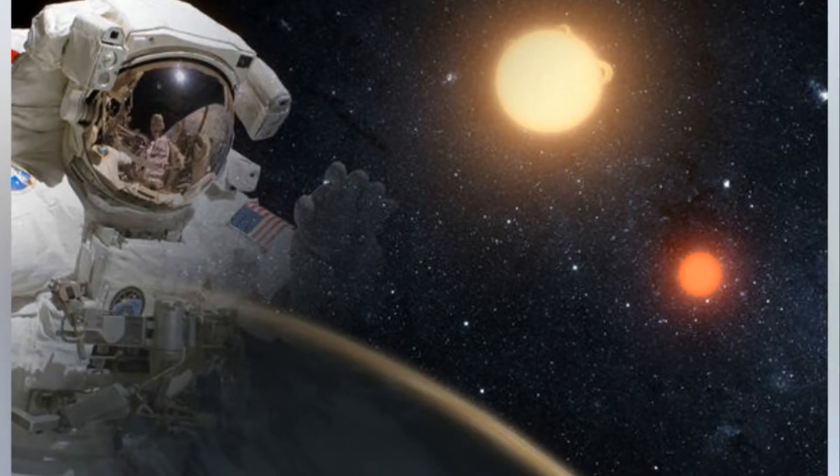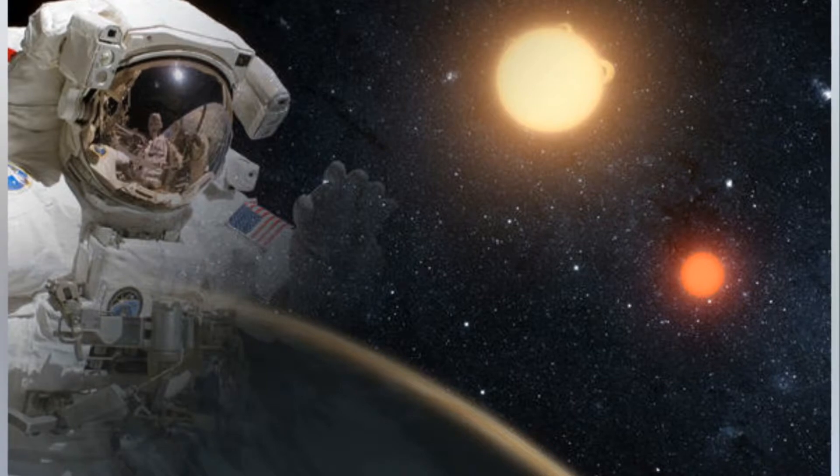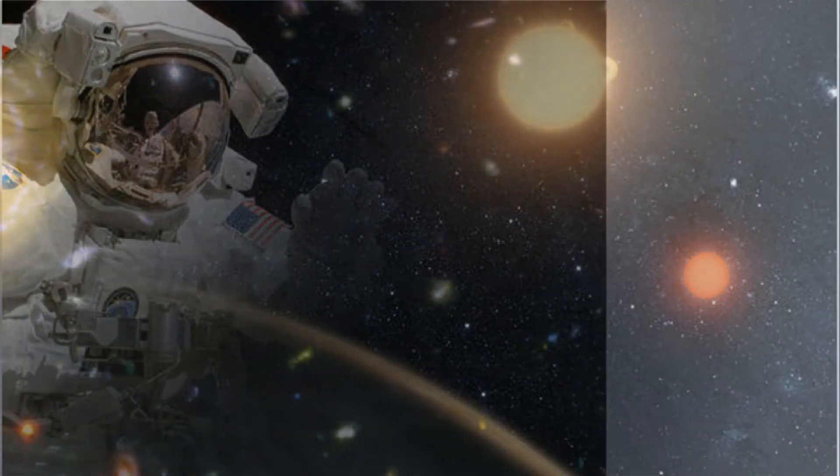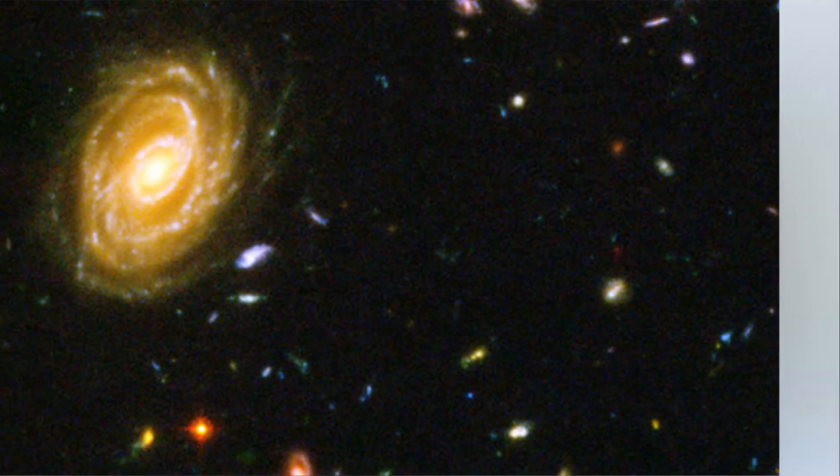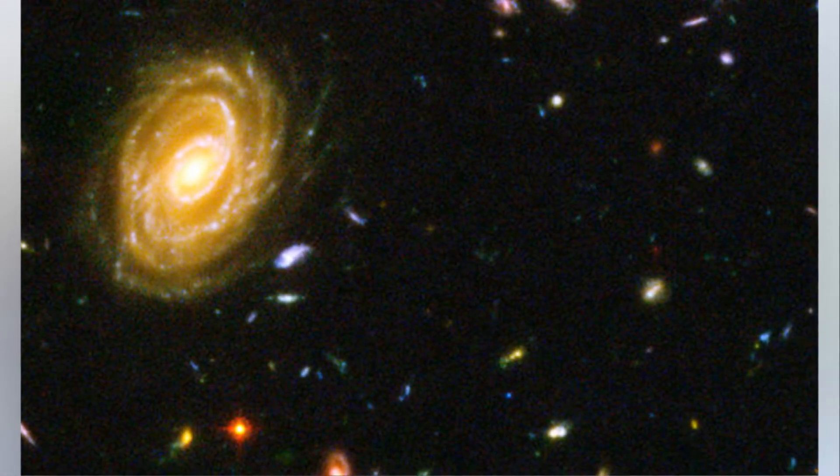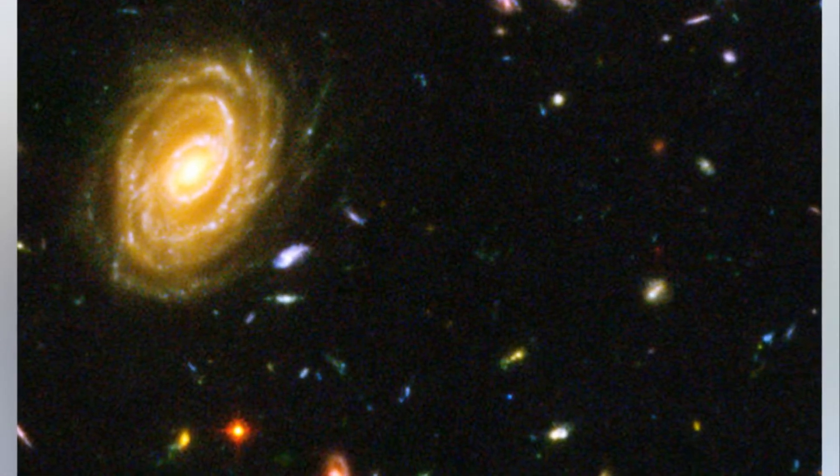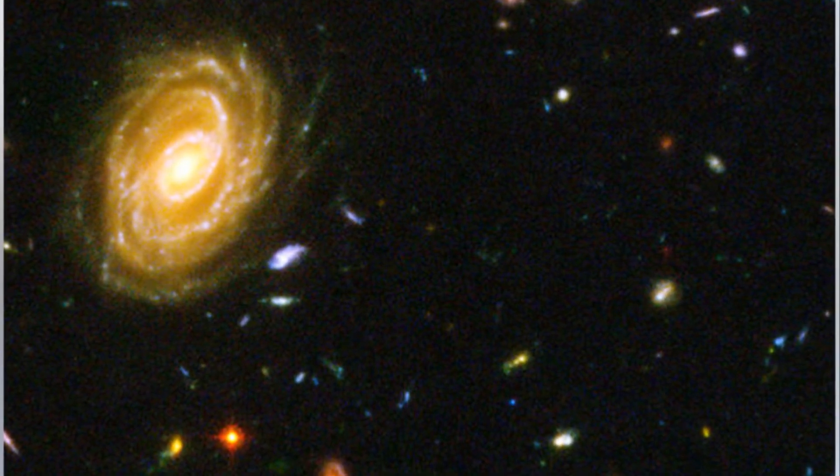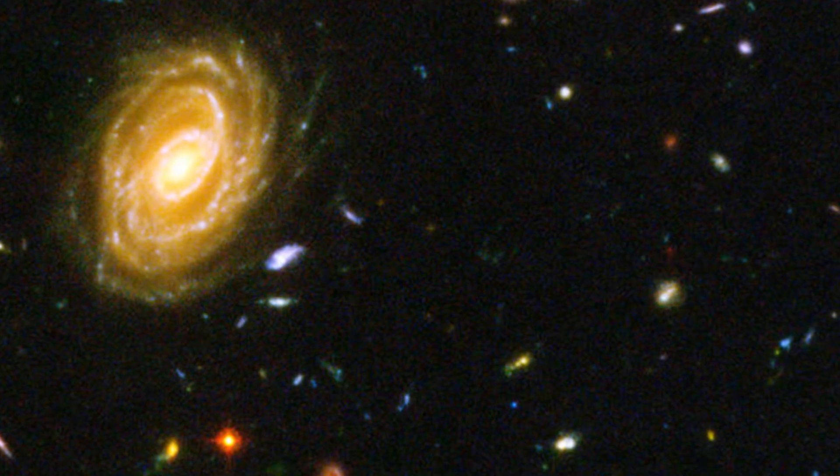According to researchers, however, Planet Nine could have tilted the entire solar system. The eight planets in the solar system that orbit the Sun are at a tilt of about six degrees compared to the Sun's equator. Computer simulations suggest an object the size of Planet Nine could have caused the tilt over the 4.5 billion year old lifetime of the solar system.